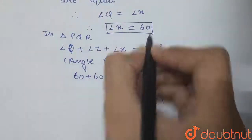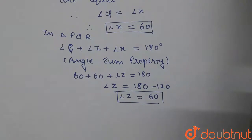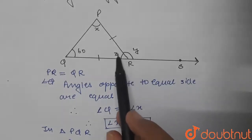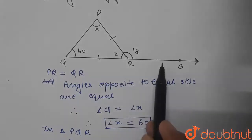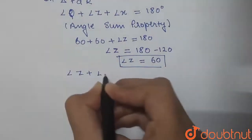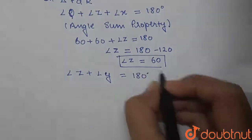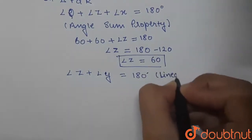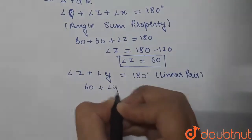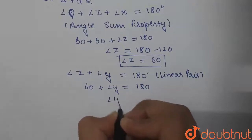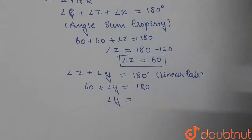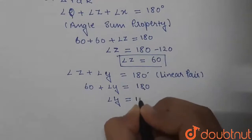We are left with angle y. Looking at the diagram, we can clearly see that this is forming a linear pair. So the angle z plus angle y, their sum will be equal to 180°. By the linear pair property, angle z plus angle y equals 180°. Angle z is 60°, so angle y equals 180 minus 60°, which is 120°.